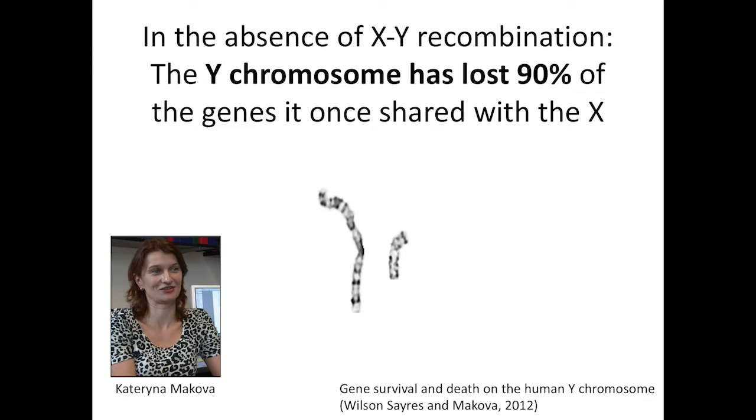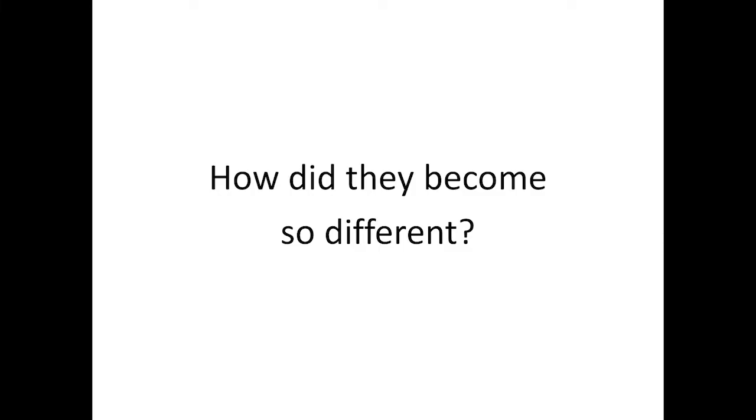In the absence of XY recombination, the Y has lost 90% of the genes it used to share with the X. Dosage is critical — for many genes, dosage can be the difference between viability and inviability. Having a single copy of a chromosome is typically not compatible with life, and yet many people have a single copy of the X chromosome and are perfectly compatible with life.